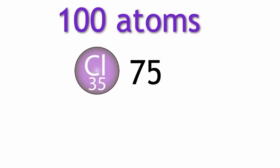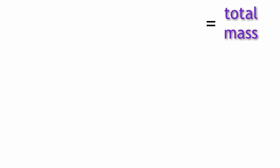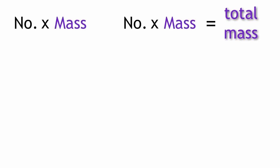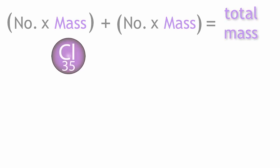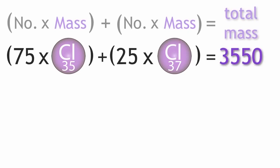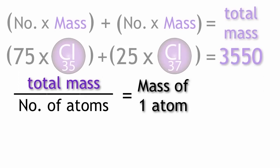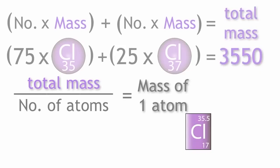Say we had a simple sample of 100 atoms of chlorine. We would have 75 atoms of chlorine-35 and 25 atoms of chlorine-37. We first find out the total mass of the sample by multiplying the mass of each atom by the number of atoms present for each isotope, and then we add them together. For chlorine-35 there are 75 atoms, and for chlorine-37 there are 25 atoms. So the mass of 100 atoms would be 75 times 35 plus 25 times 37, which equals 3550. The mass of one atom would be the total mass divided by the number of atoms, so 3550 divided by 100, which gives 35.5.